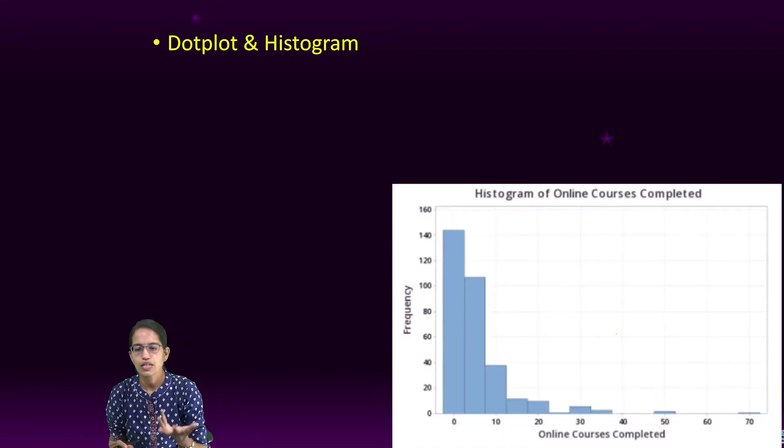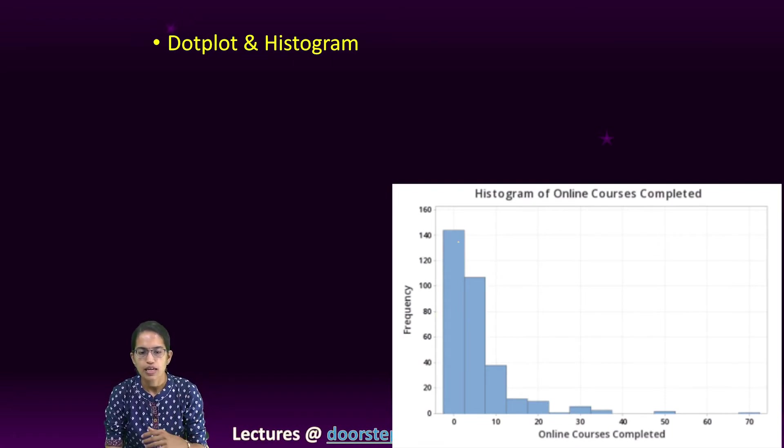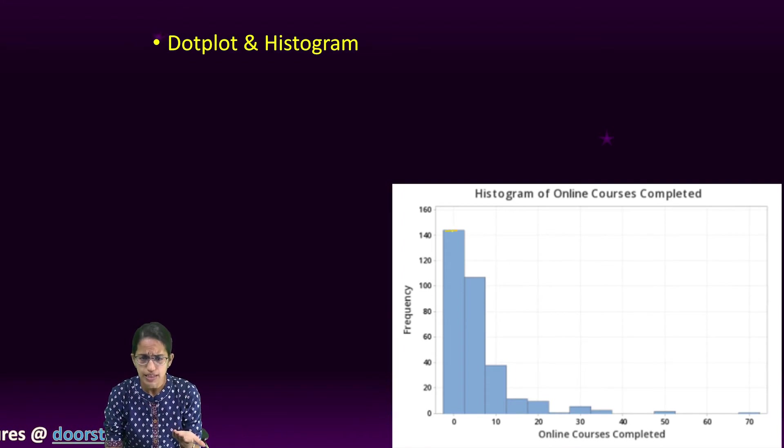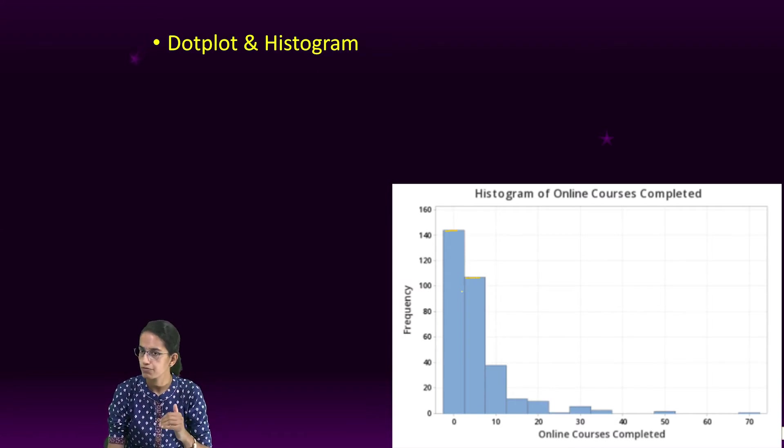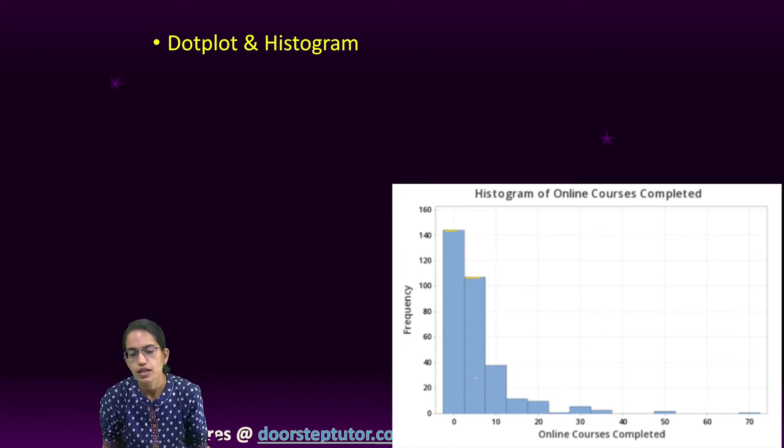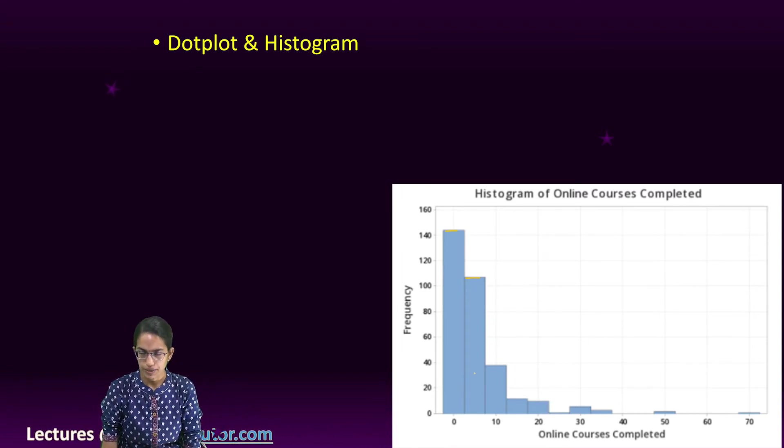If I don't want to count the number of dots, I can have a histogram—a representation in graphical format. Let's say how many online courses have you completed. 140 hours of online courses have been completed by this many people, and so on.